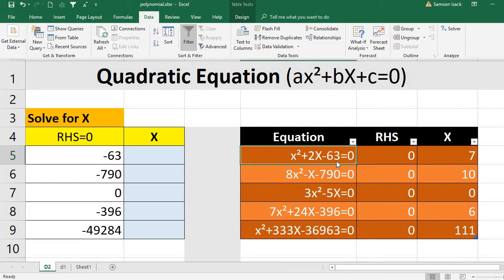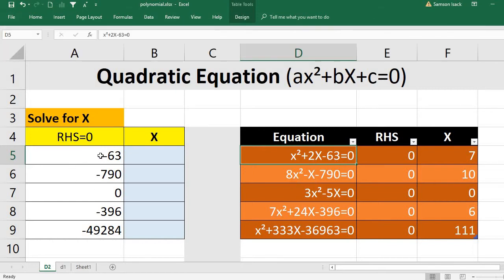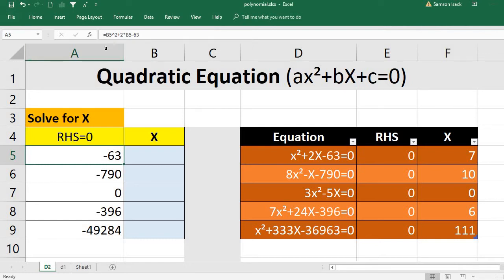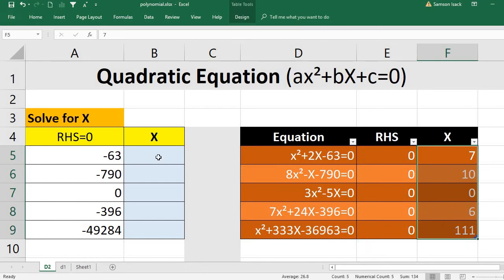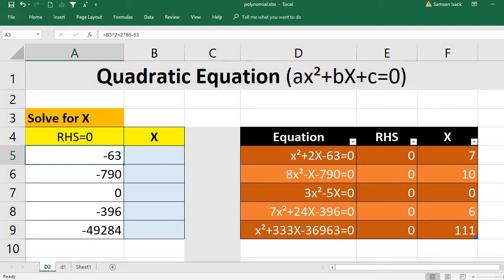x² + 2x - 63. So how to solve this? I have here the same thing, x². Here the x is nothing but cell b5. So what I am going to do, I am going to solve every equation here. I already have the answer here.